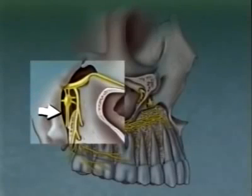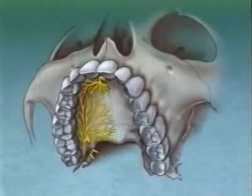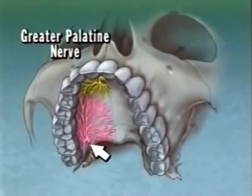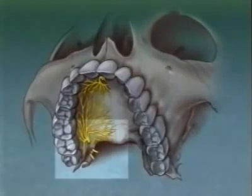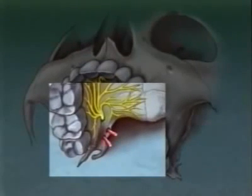Palatine branches of the pterygopalatine nerve pass down the pterygopalatine canal and exit via foramina on the posterolateral aspect of the hard palate. The greater or anterior palatine nerve emerges through the greater palatine foramen to supply general sensation to the soft tissues of the hard palate and palatal gingiva. The other branches exit from the lesser palatine foramina and innervate the soft palate, uvula, and tonsillar area.